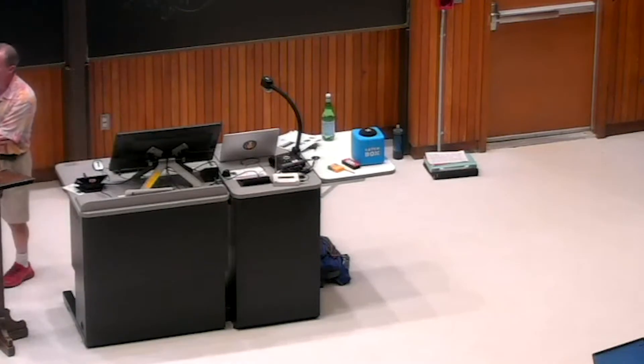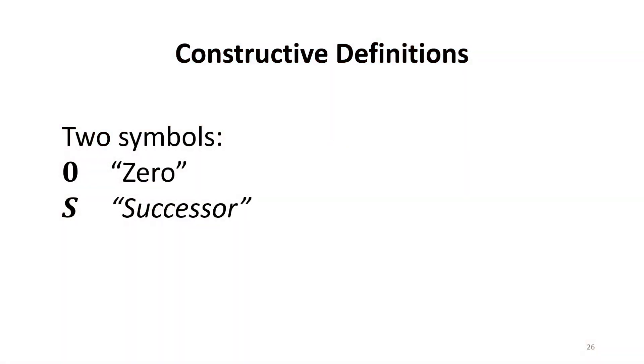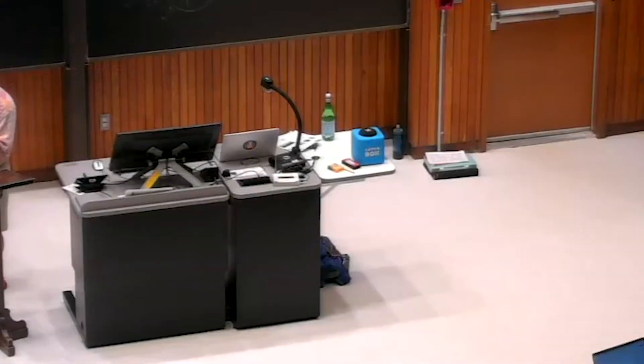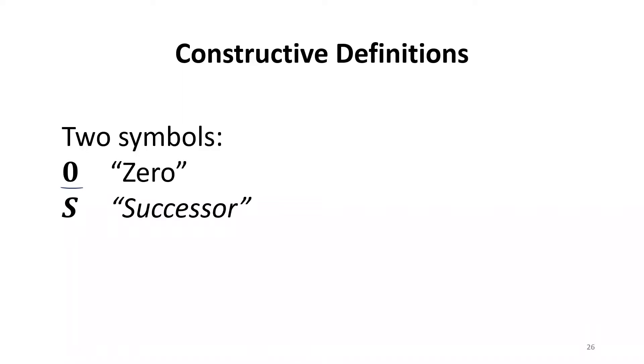We're going to try to define the natural numbers, and we're going to start with just some notation. Here I've made the assumption that we want to include zero, but zero is just a symbol. Whether this means what we think of as zero or not, we haven't given it any meaning yet. And we're going to have a function called successor.